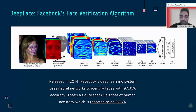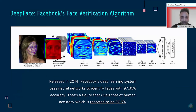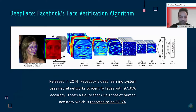Facebook uses neural networks for facial detection with a recent accuracy of 97.35%, just below human-level accuracy of 97.5%. This model, released in 2014, uses a nine-layer convolutional neural network with over 120 million connection weights, trained on over 4 million images uploaded by Facebook users. Facebook uses the images we upload on their platform to train their neural networks — which honestly shouldn't be a surprise.